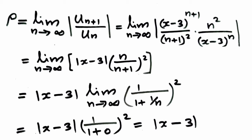That is equal to mod x minus 3 into 1 by 1 plus 0, since we know that limit n tends to infinity 1 by n is 0. Therefore, it will become mod x minus 3.